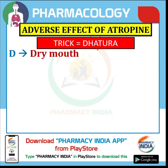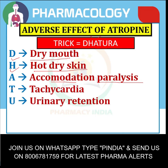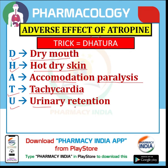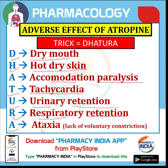D denotes dry mouth, H denotes hot dry skin, A denotes accommodation paralysis, T denotes tachycardia, U denotes urinary retention, R denotes respiratory retention, and A denotes ataxia — that is, lack of voluntary constriction. So DHATURA is the trick you can learn like this.